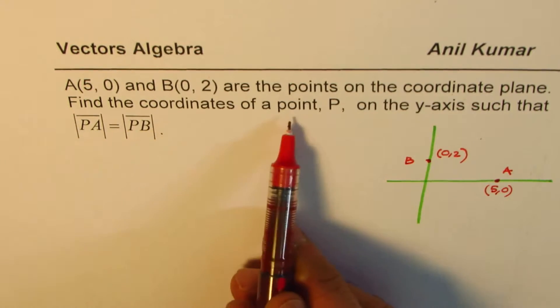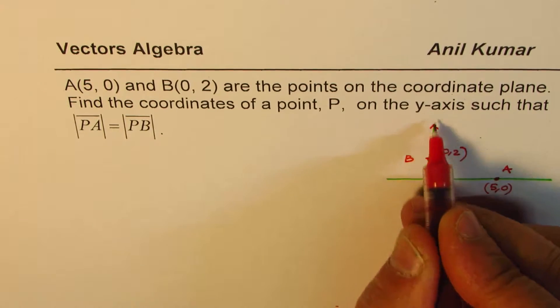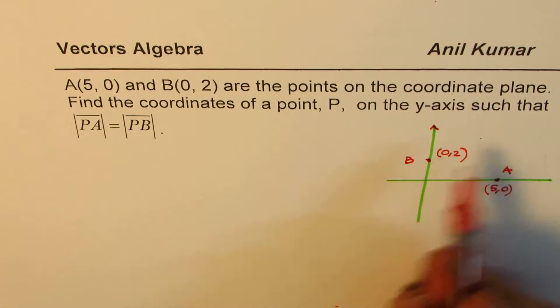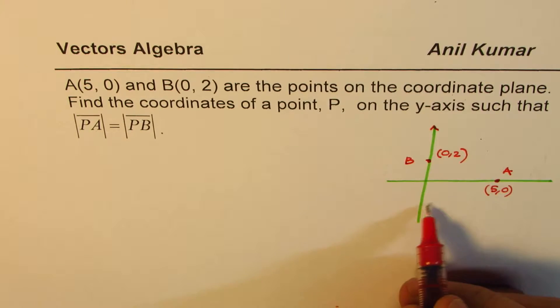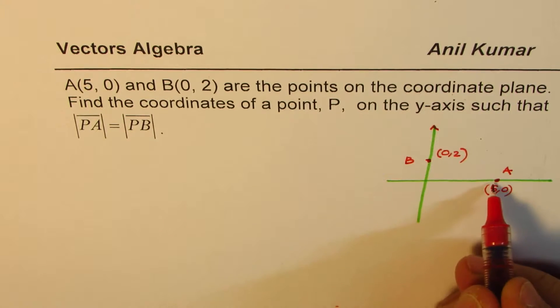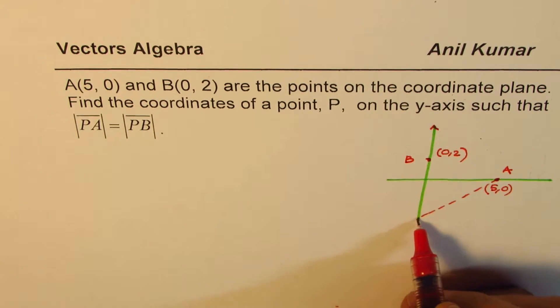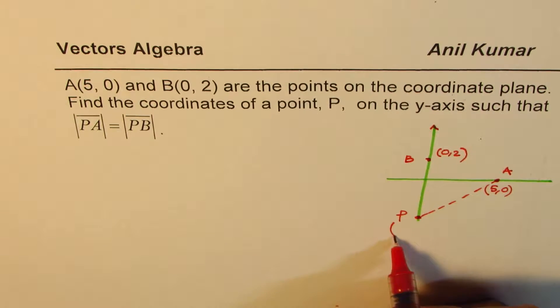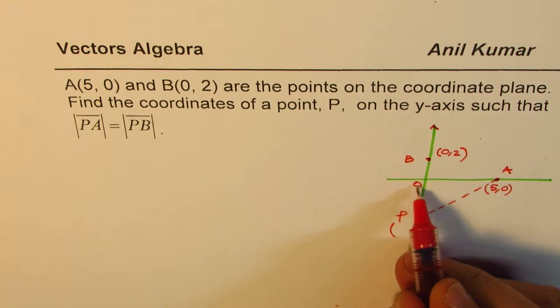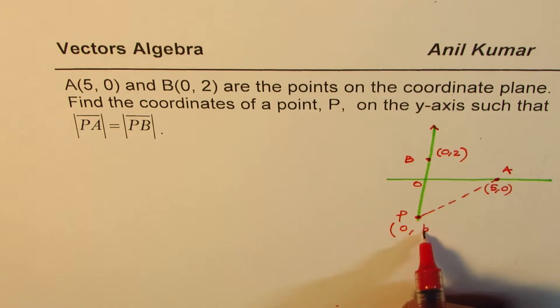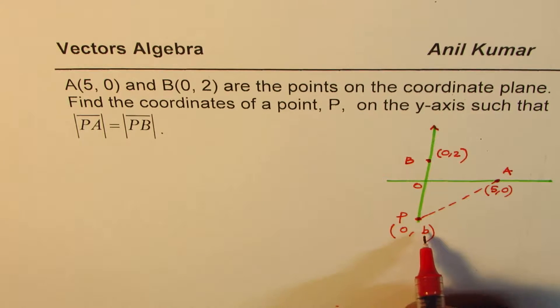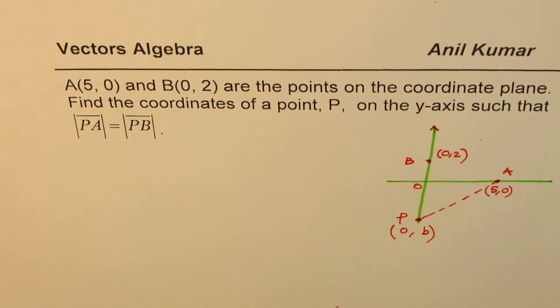Find coordinates of point P on the y-axis such that PA and PB are equal. Let's take a point here, P. We don't know what the coordinates are, but what can be the coordinates? X value has to be 0, and let's say b is the y-axis. So what we have to say is that PA equals PB.